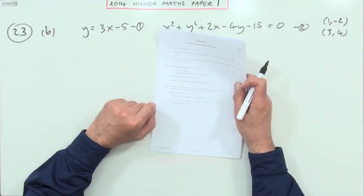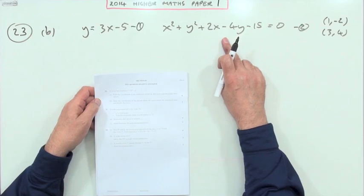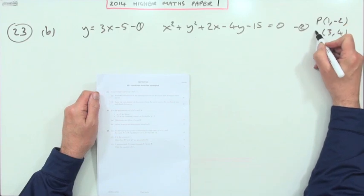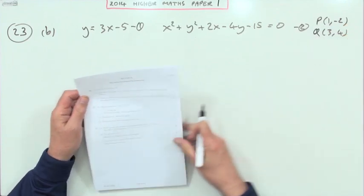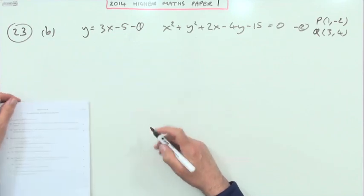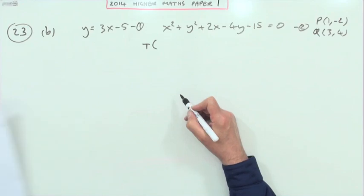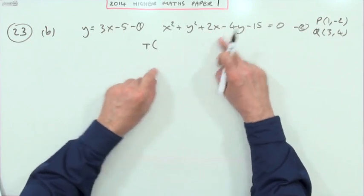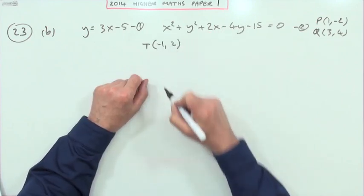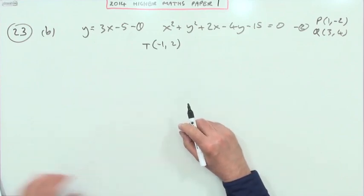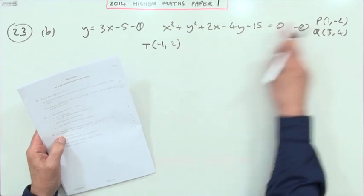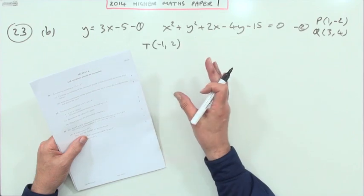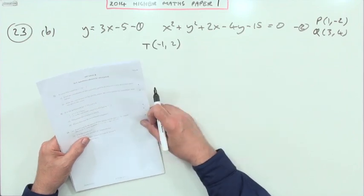Now part B says T is the center of this circle, so that PT—and I was calling this P and this Q—is perpendicular to QT. Well first of all, what is this center? Well you can pull it out of these two terms here, it's the negative of half of those coefficients, so it's negative 1, 2. If it says show that PT is perpendicular to TQ, you've got two possible routes: you could use the scalar product or you could use gradients.